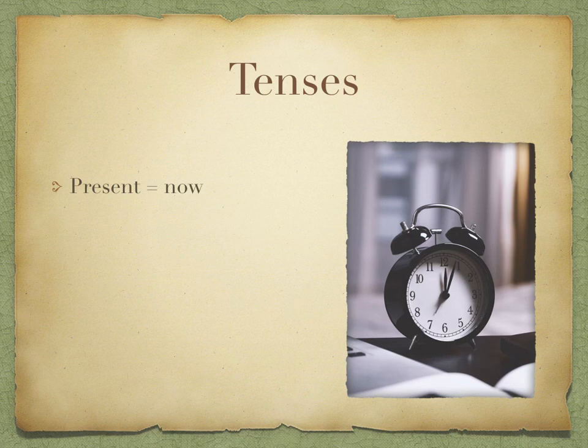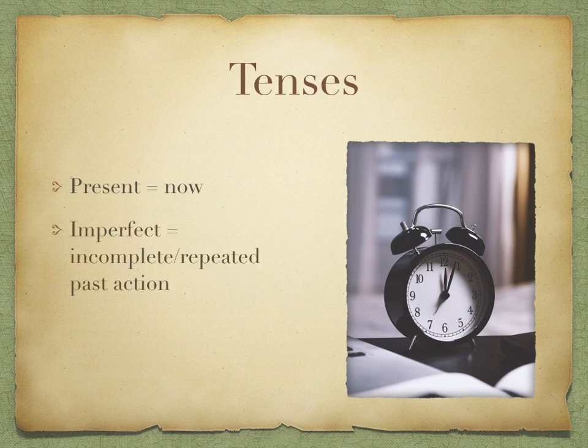We've also met two different tenses which happen in the past. The first is the imperfect, which is used to describe an action which is either incomplete or has been repeated in the past — 'I was eating', 'I used to eat', and so on. It also suggests that it's been interrupted; for example, 'I was eating dinner when the phone rang' — that suggests I didn't get to finish my dinner.